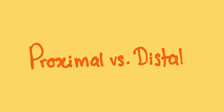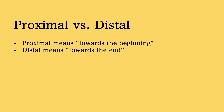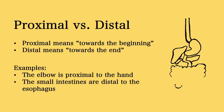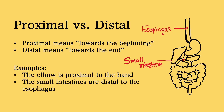Next, we have the terms proximal and distal. Proximal means towards the beginning and distal means towards the end. These two terms often refer to tube-like structures such as the genitourinary tract and the digestive tract. For example, the elbow is proximal to the hand, meaning the elbow is closer to the beginning of the arm — the shoulder joint area — than the hand is. Another example is that the small intestines are distal to the esophagus, because the beginning of the digestive system is the mouth, and the intestines are farther from the mouth than the esophagus.